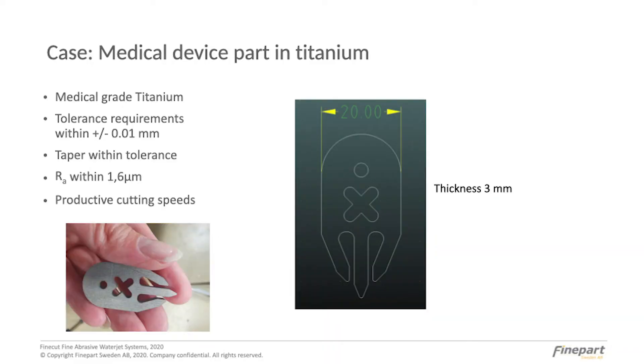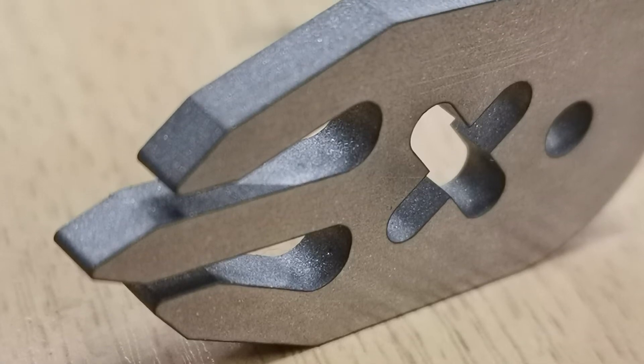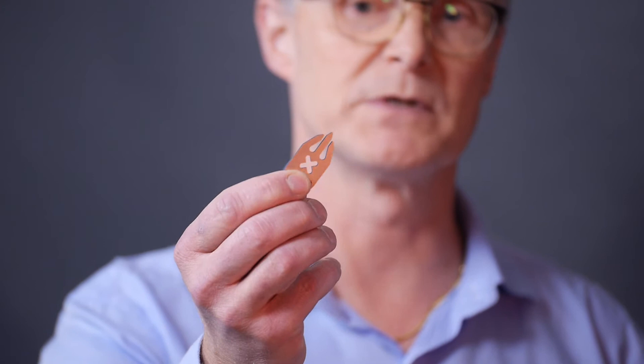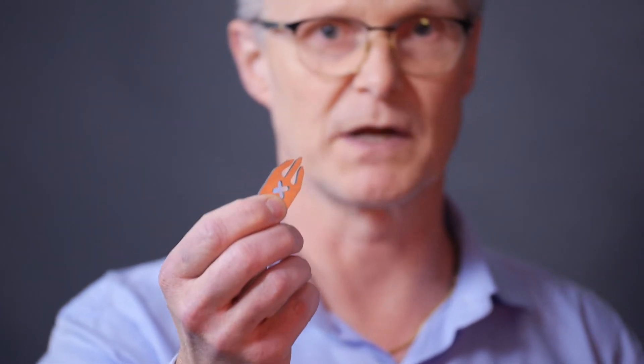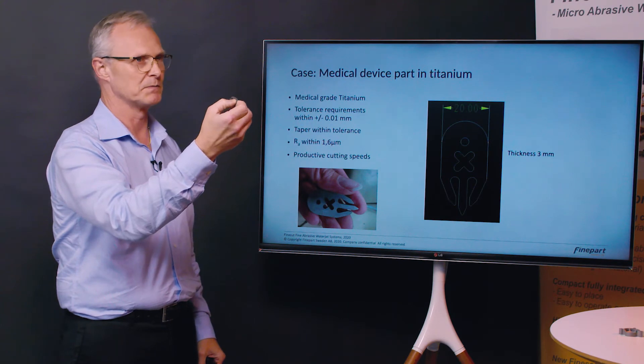We have made a case where we have a medical device part in titanium. This part has a tolerance requirement of plus minus 10 microns. It's made from three millimeter thick titanium. The taper of the cut must be within tolerance as well and we need to have an RA value below or equal to 1.6 micron.